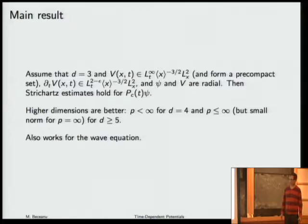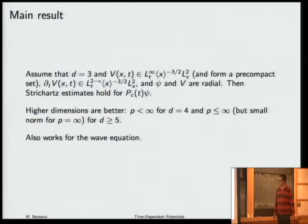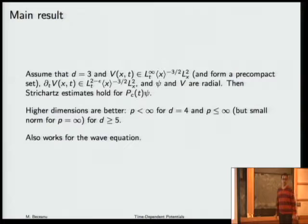If you have a bound on the Strichartz norm that is finite, that's good, but knowing how it depends on the potential is better. This dependence may not be explicit because even in the time-independent case it's not explicit. Even when the potential is constant with respect to time, I don't see a very nice and easy explicit dependence of the constant in the Strichartz inequality on the norm of the potential. I would venture that the dependence is at most exponential, and I think that's going to be very easy to prove.